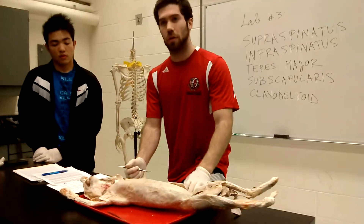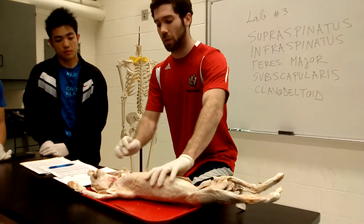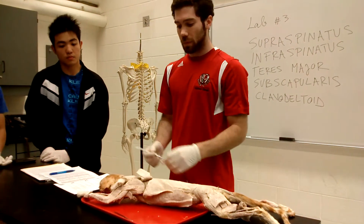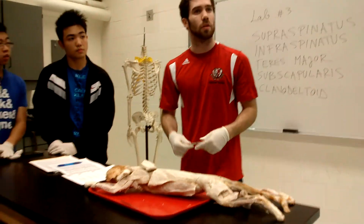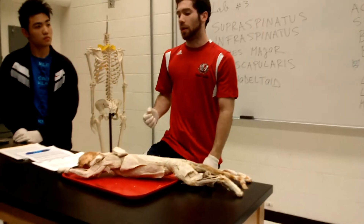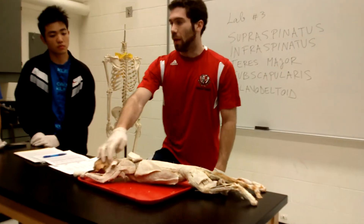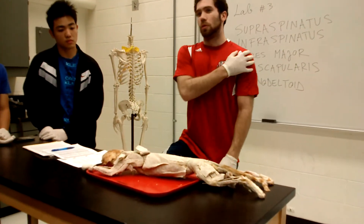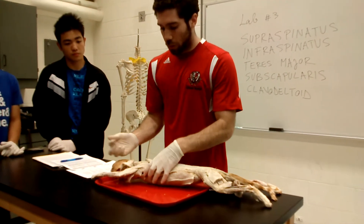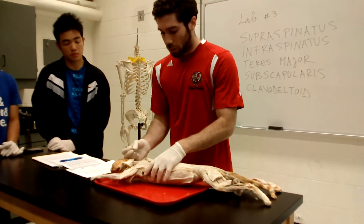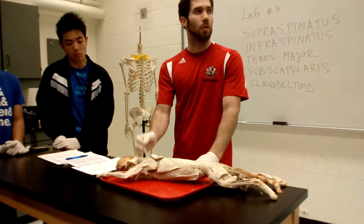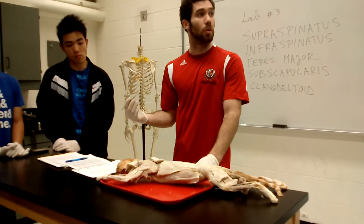I'll show you the new material quickly on the cat and then we'll do the lesson. This week we're doing rotator cuff muscles right on the scapula, as well as upper arm muscles and deltoids — so your shoulder muscles and upper arm muscles. The names for these muscles actually indicate where they're coming from and where they're going, so keep that in mind.